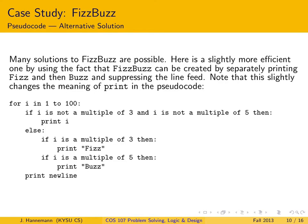Here's a slightly more efficient solution that the class came up with as we were walking through this on the whiteboard. It's fairly efficient — you'll see that the number of questions has been reduced to just three. It's fairly elegant because it hinges on the notion that when I print fizz and do not advance the line, and then print buzz on the same line, I do get fizzbuzz.